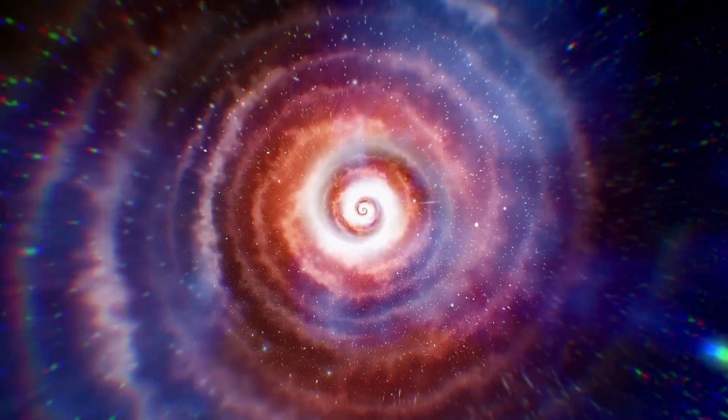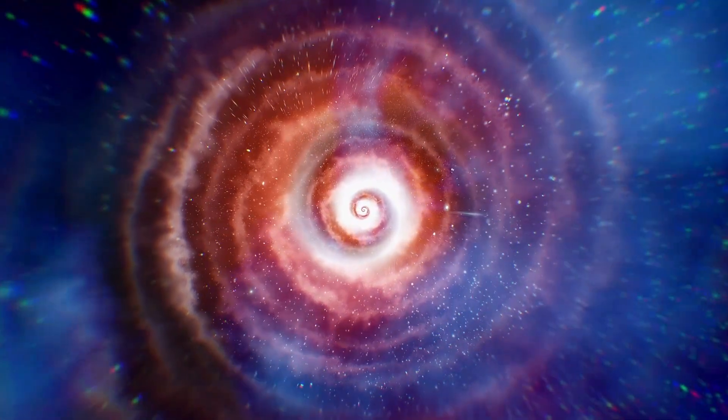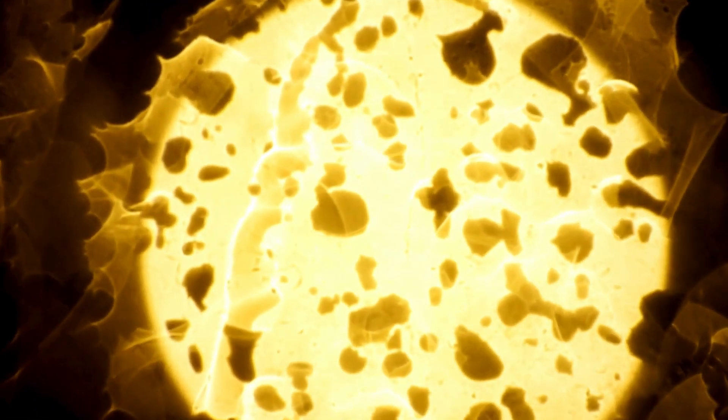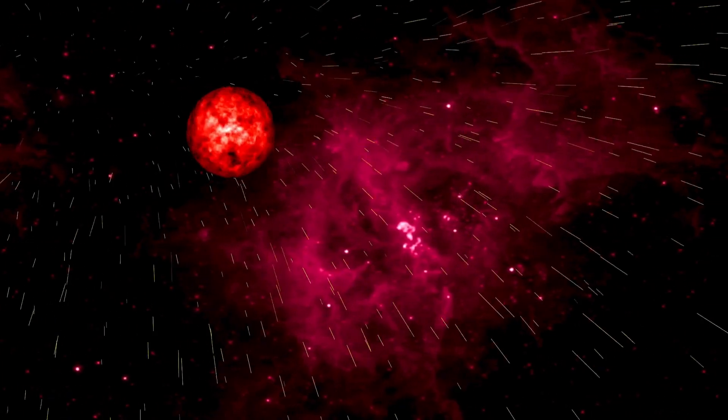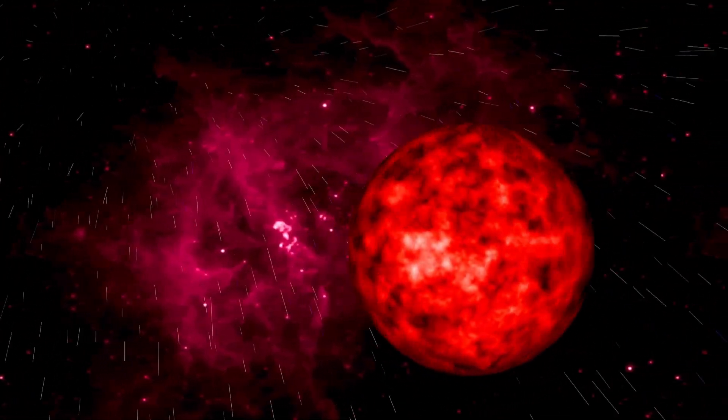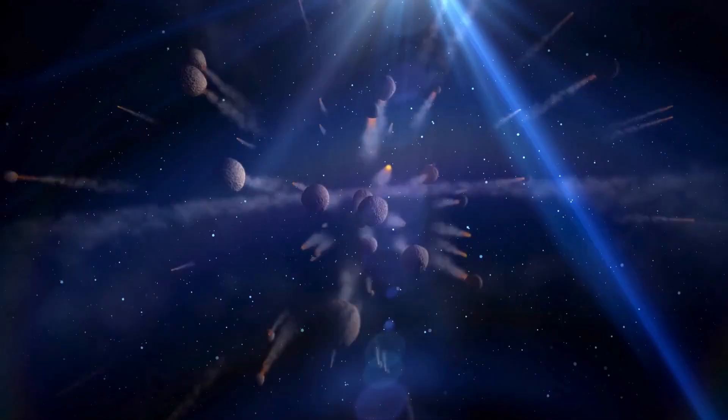Betelgeuse's age is equally remarkable, estimated to be around 8 to 8.5 million years old. It may seem young by human standards, but in stellar terms, it is ancient. Stars like Betelgeuse have short lifespans compared to smaller stars like our sun, and its current phase represents the final stages of its existence. It has undergone a radical transformation from a hot blue star to the cooler red supergiant we observe today.